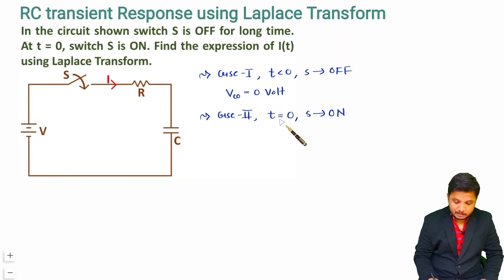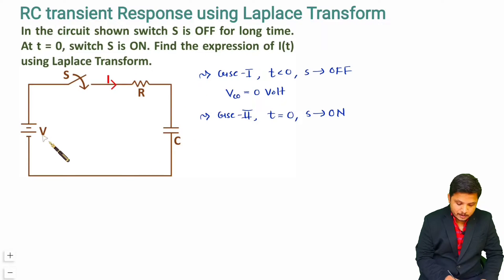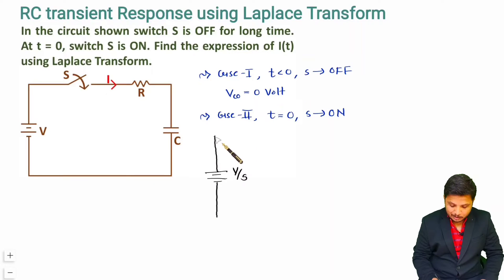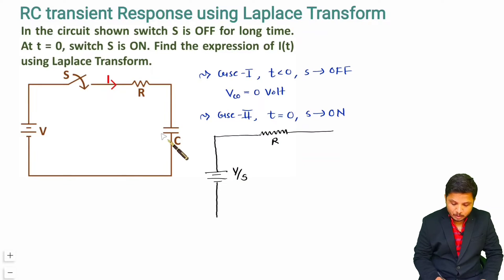At time t equals 0, the switch turns on, and now I will connect this circuit in the form of the Laplace domain. We have a DC voltage source with constant voltage V, so in the Laplace domain this DC voltage will be represented as V divided by S. For the resistor, there will be no change — it remains R.